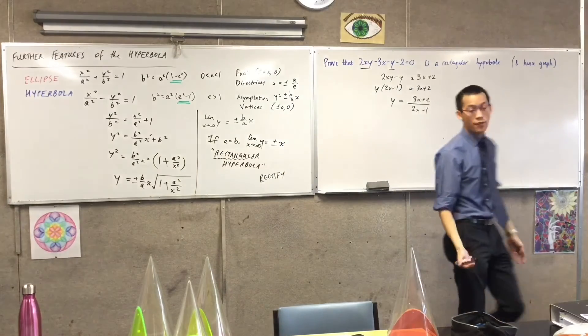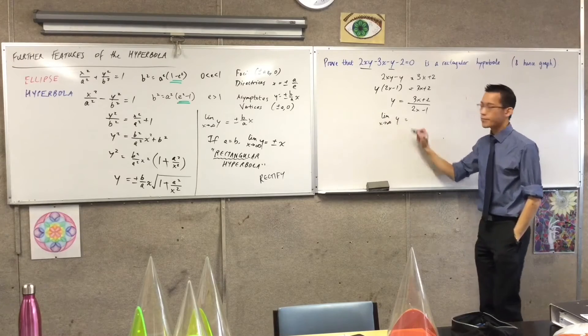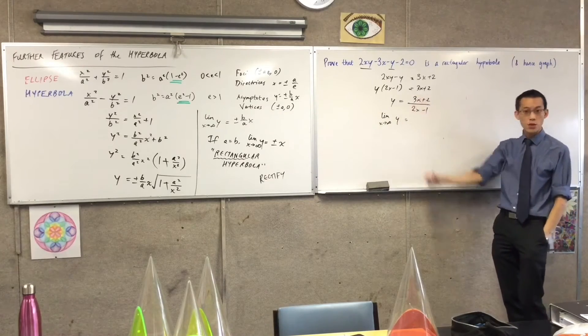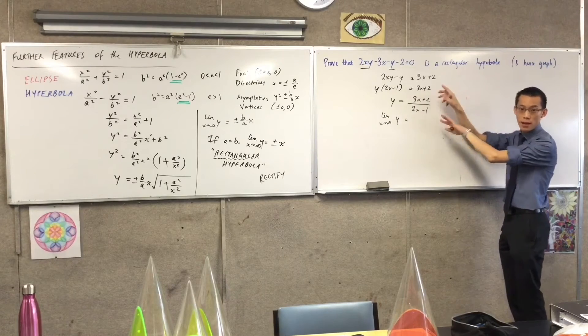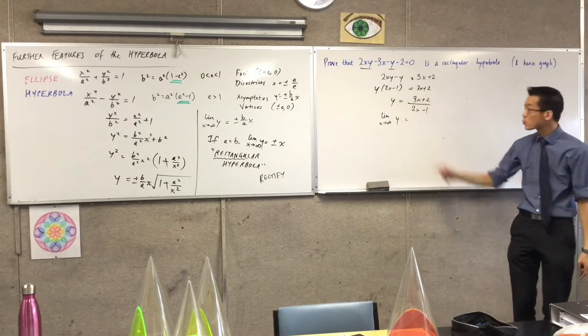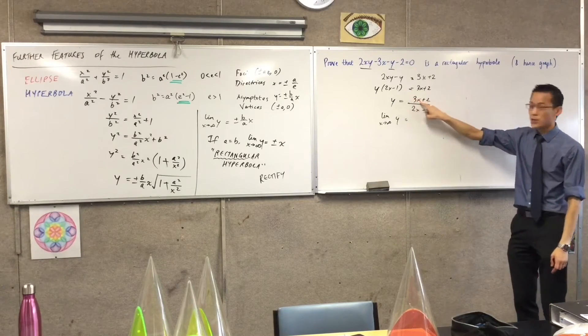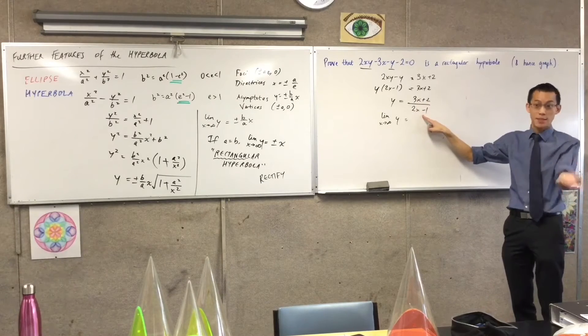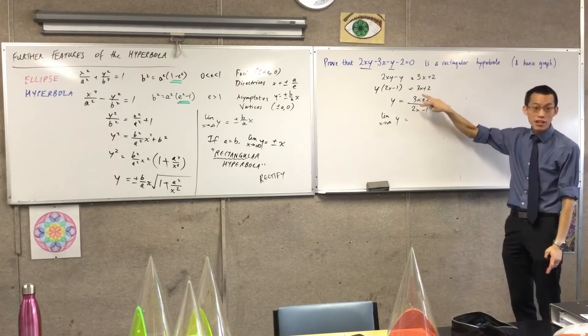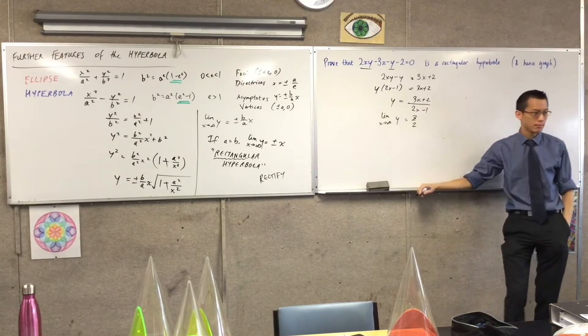I take the limit as X approaches infinity. As X approaches infinity, have a look at these four terms you've got over here. This 2 and this minus 1 become insignificant, trivial. When you compare them to infinity, who cares what they're going to be? You have three lots of some enormous number divided by two lots of the same enormous number. So clearly, you have a ratio happening here - you just get 3 over 2. It's just a constant.